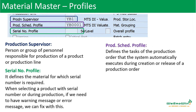Then we have various profiles and the production scheduler details. The production supervisor is a person or group of personnel who are responsible for the production of a product. For example, if you have a production line, the person responsible — their name will be maintained here. Whenever you take any reports related to production orders or planned orders, you can select this as a selection parameter to see those planned orders and production orders. Then we also have the serial number profile, which defines the material for which a serial number is required.